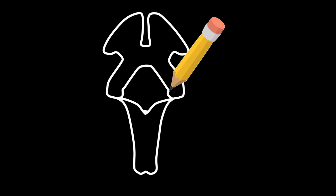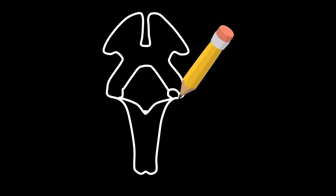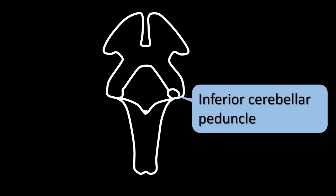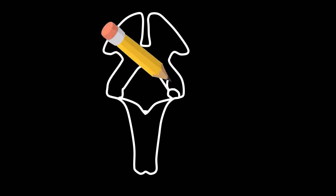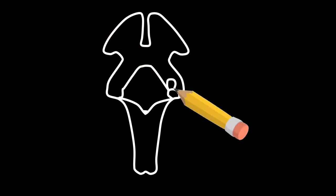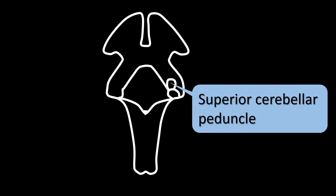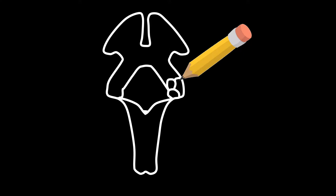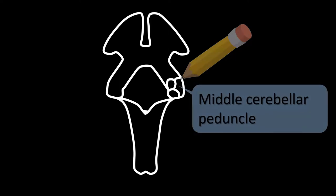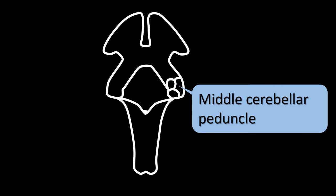Now let's go back to the drawing and go to the right side. Draw a curved line going down to form a circle. This is the inferior cerebellar peduncle. Then go just above it and make another line, sort of like a circle. This represents the superior cerebellum. Now go next to it and draw a line joining with the edge of the circle, with the edge of the tracing at about the same level. This is the middle cerebellar peduncle.